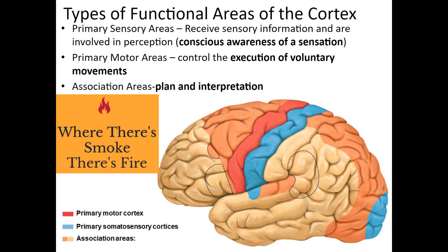A useful example: if we see smoke, the sensory area perceives it with our eyes, and we may smell it through our olfactory cranial nerve. The association area recognizes the smoke and smell and correlates this to the fact that there is a fire. If the fire were close, the motor area sends signals out to our muscles to move our legs away from it.